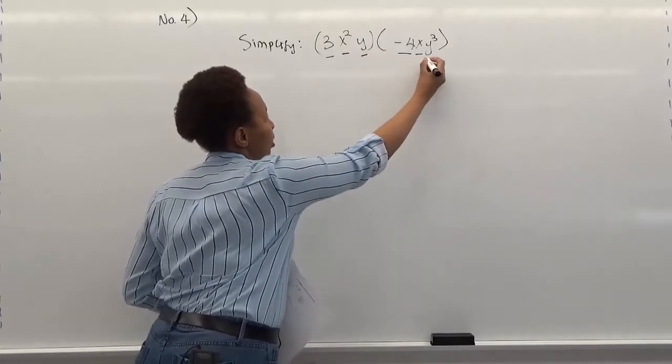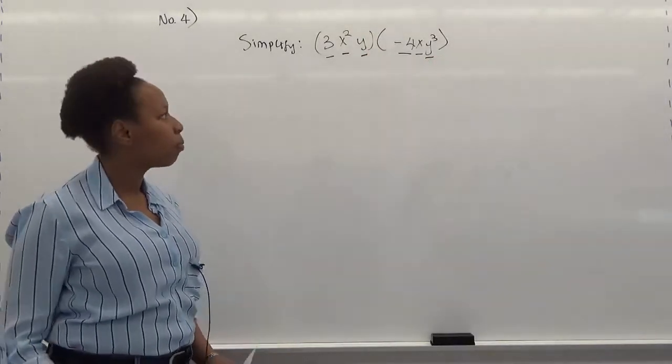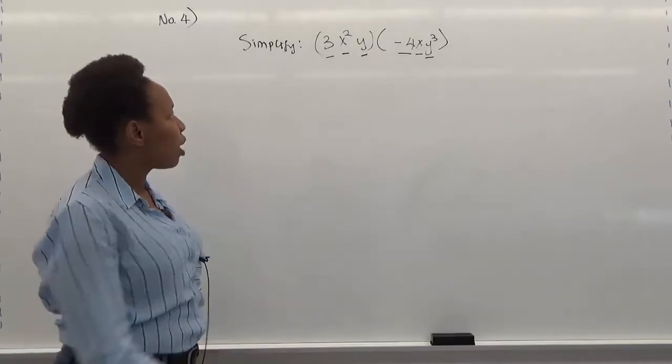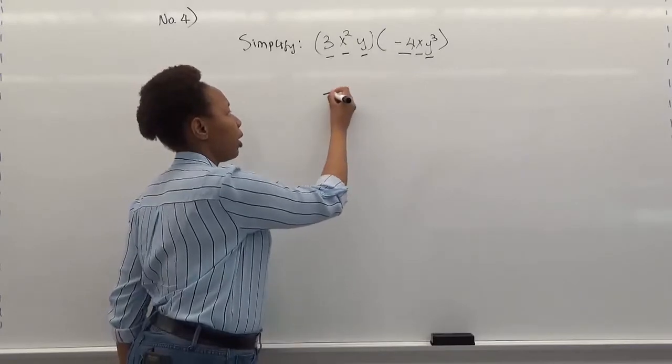Now, in this case, what we're supposed to do is to take like terms and multiply them. So what will happen is that 3 and negative 4 are like terms. So we multiply them and they become negative 12.